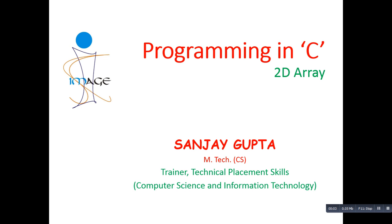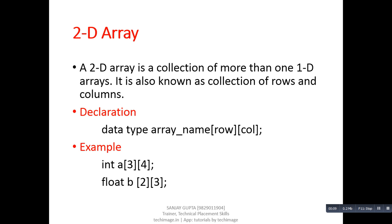Hello friends, I am Sanjay Gupta. In this tutorial I am going to discuss about 2D arrays. A 2D array is a collection of more than one 1D arrays. It is also known as a collection of rows and columns. As we have already discussed about 1D array, it was a collection of more than one elements. Now suppose we have more than one 1D arrays and we want to reduce them into a single variable — we can combine all those 1D arrays into a single 2D array.